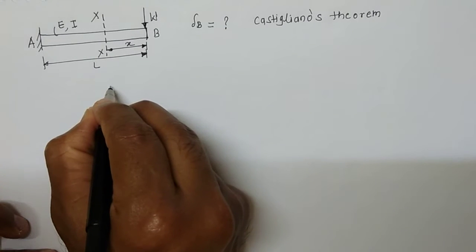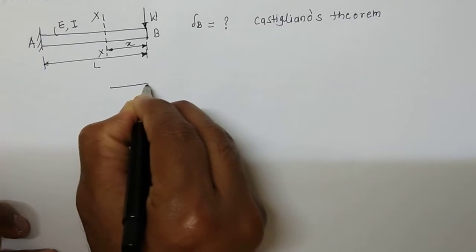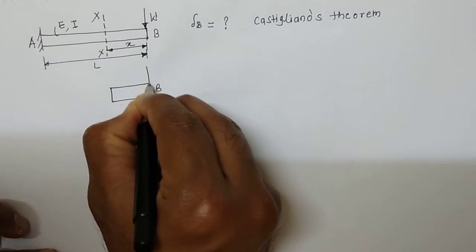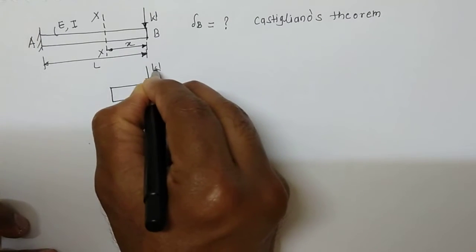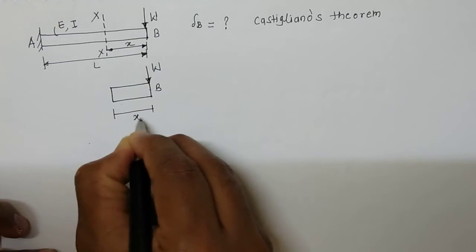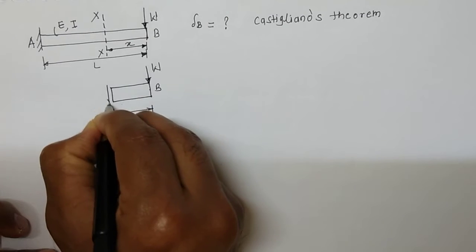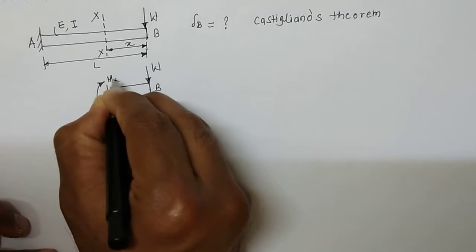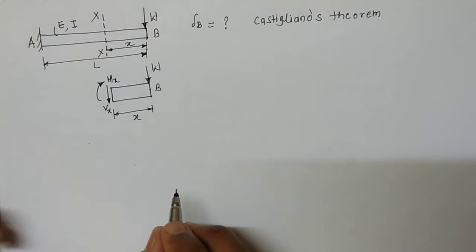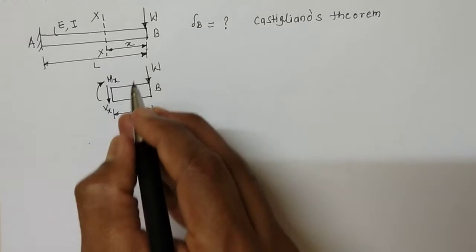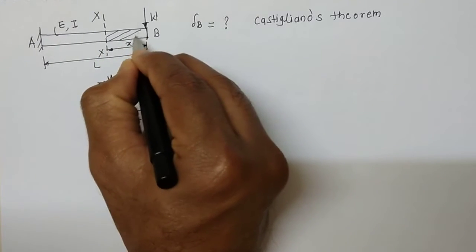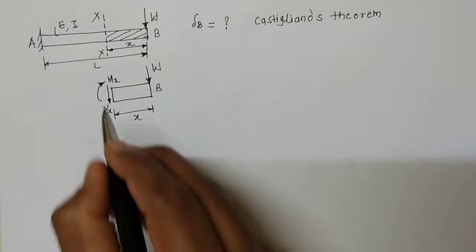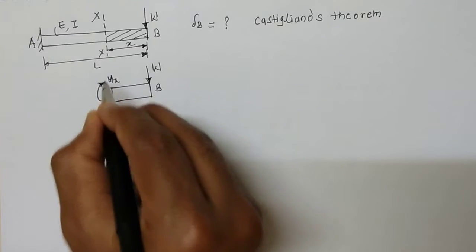Drawing the free body diagram of this portion between A and B, with the concentrated load W applied at B, this section has length X. Here VX is the shearing force and MX is the bending moment at section XX. This is the free body diagram of the shaded portion of the beam.